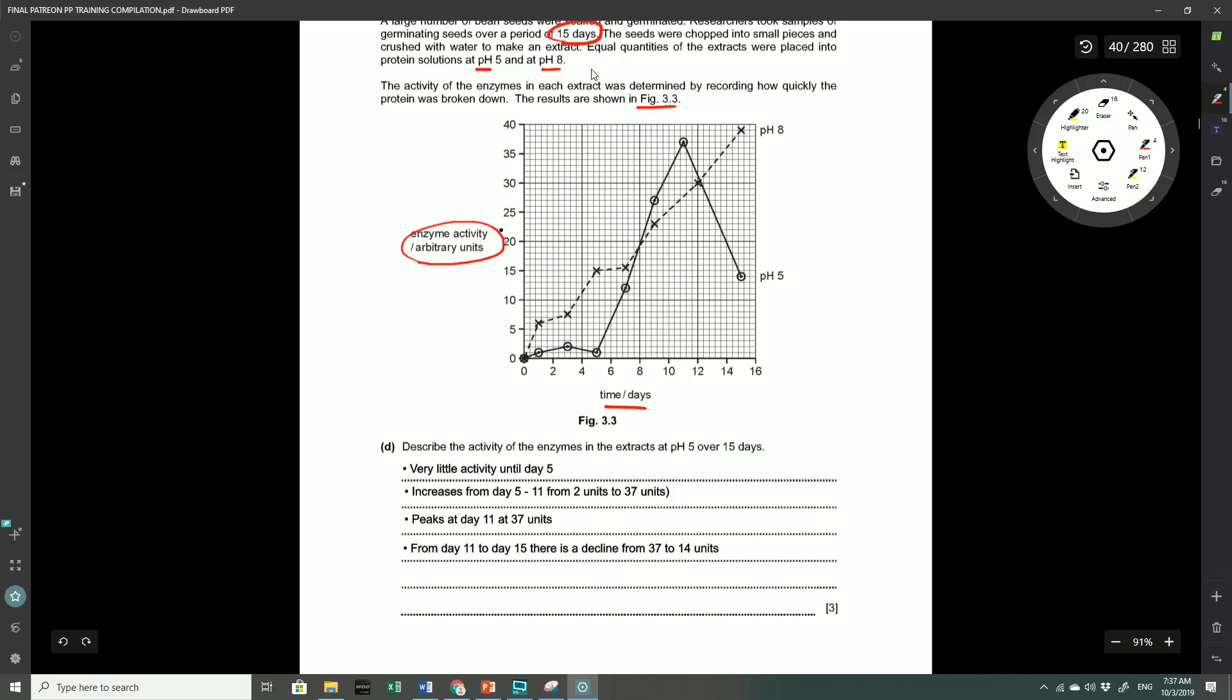They ask you to describe the activity of the enzymes in extract at pH 5, so we can ignore pH 8. Let's separate this graph into its different components. You can see in this region here there's a very mild or little activity. Whereas from this point to this point, you start to get a fairly rapid increase. And from this point to this point down here, you get a moderate decrease. So we've got three different parts of the graph that we can describe.